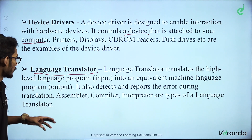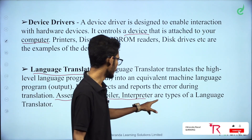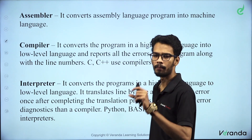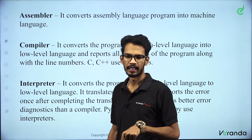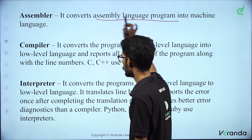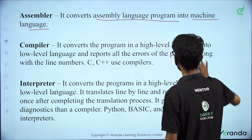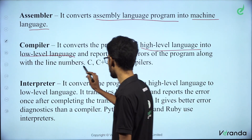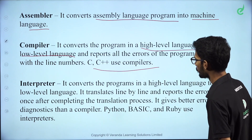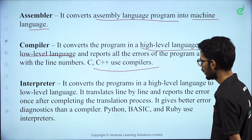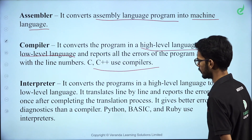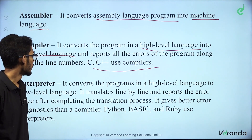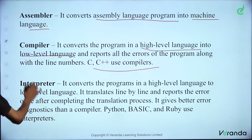If you look at what language translators are, there are three: assembler, compiler, and interpreter. First is assembler — it converts assembly language into machine language. Our language is not machine language, so it converts high-level language and low-level language. For example, C and C++ use compilers. A compiler reports all the errors of the program along with the line numbers.